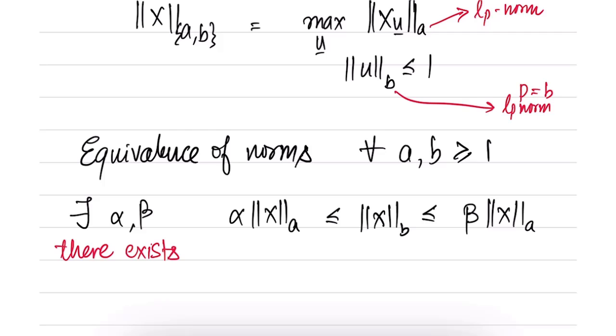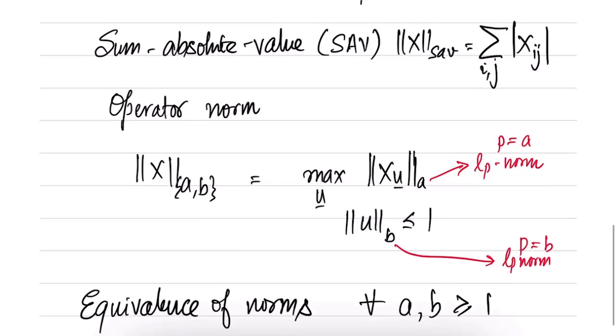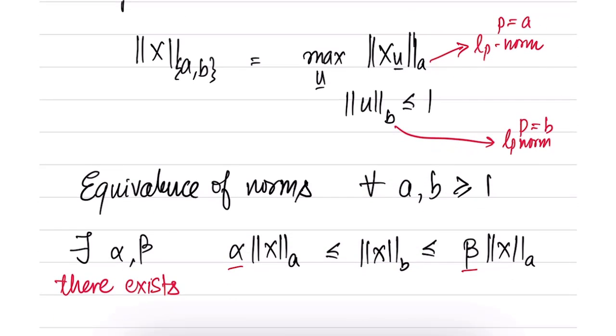And there will always exist some constants α and β to do that. Note that α and β are constants which means that α and β would not depend on x. They may of course depend on n, a, and other things, but they will not depend on x. So this is a general result.